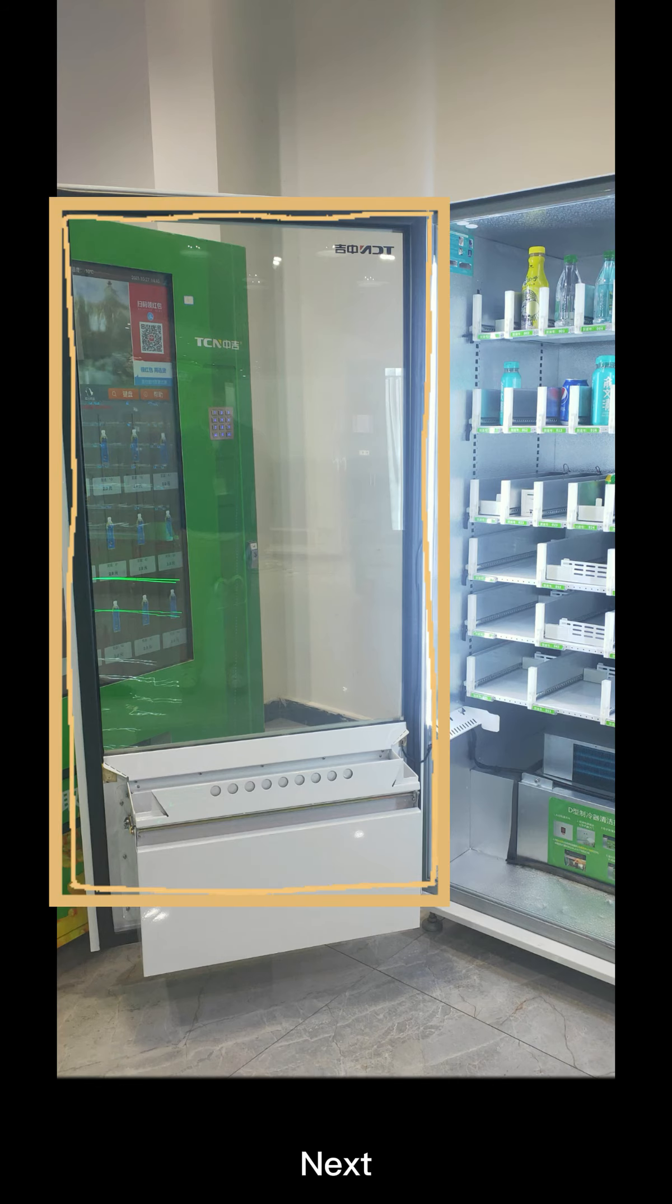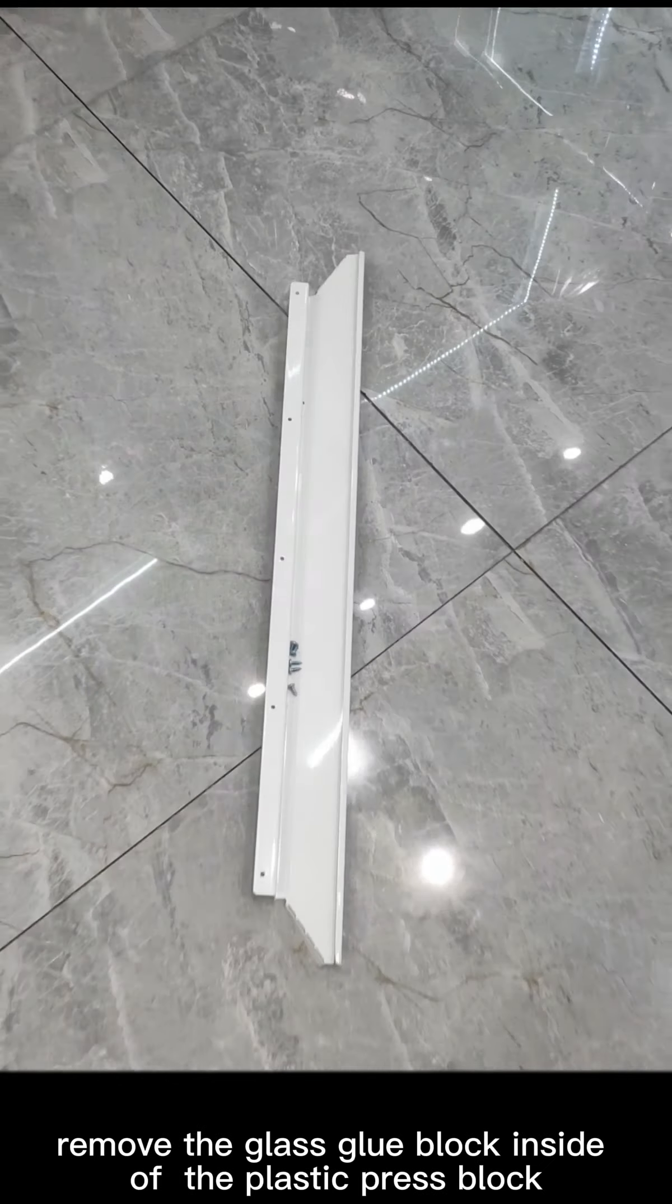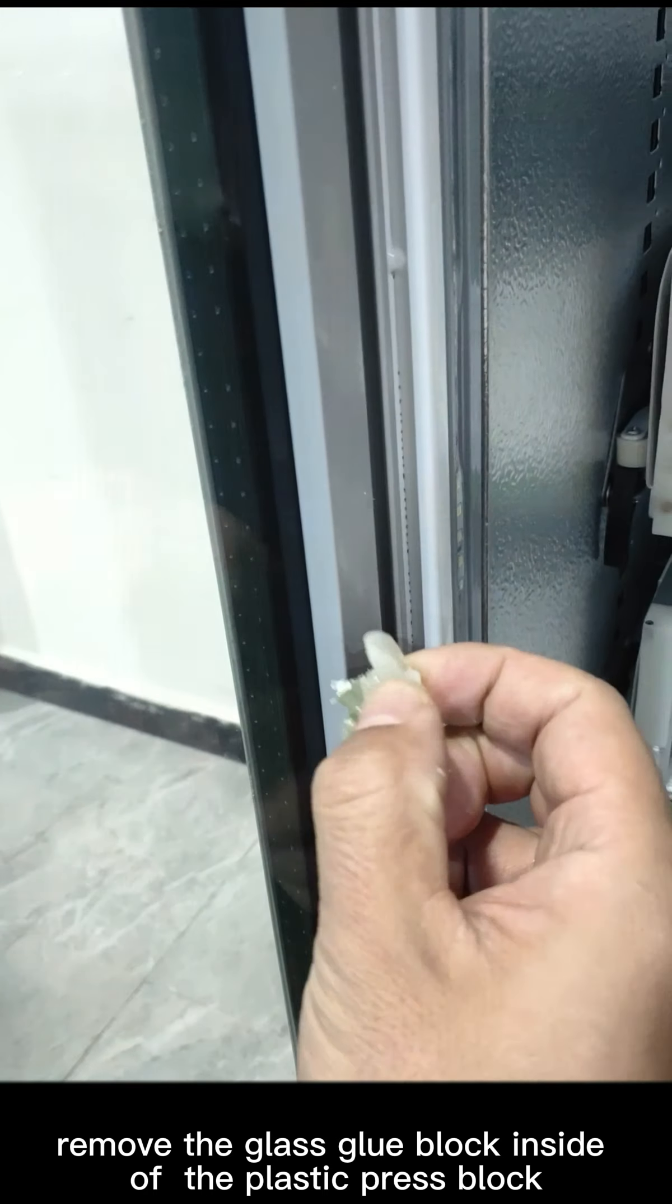Next, slowly remove the sealing rubber ring and put it aside. Loosen the screws of the sheet metal under the glass, put the removed screws and sheet metal aside, and remove the glass glue block inside the plastic press block.